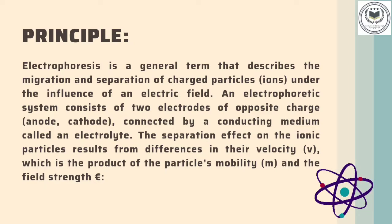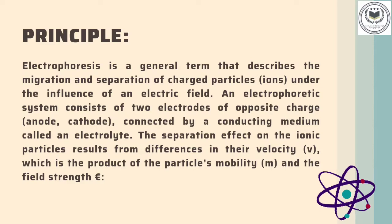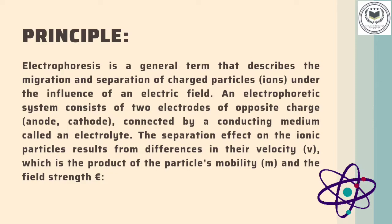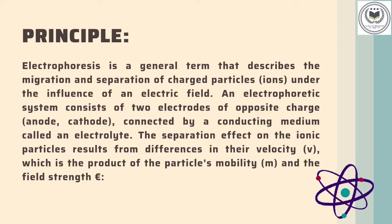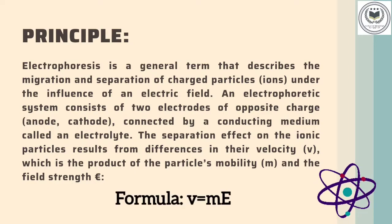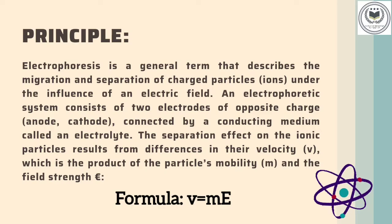The separation effect on the ionic particles results from differences in their velocity, denoted by V, which is the product of the particle's mobility, denoted by M, and the field strength, denoted by E. So the formula from this principle is: velocity (V) equals particle's mobility (M) multiplied by field strength (E).